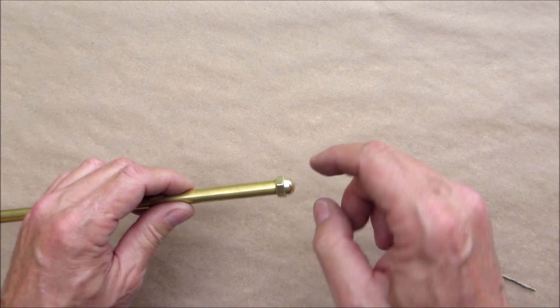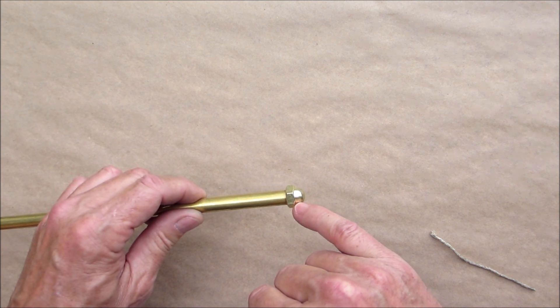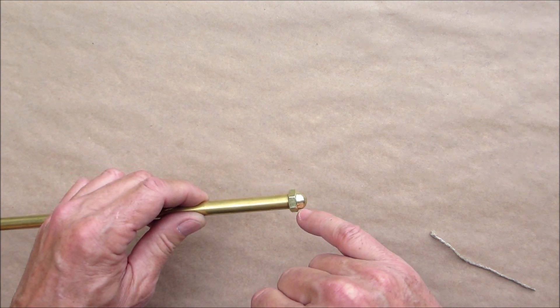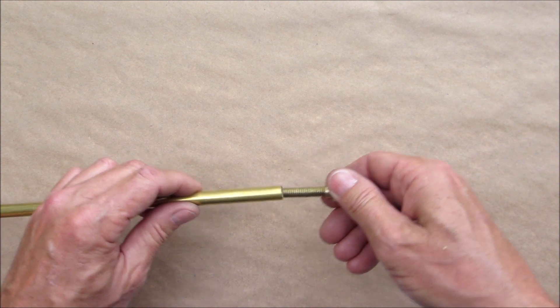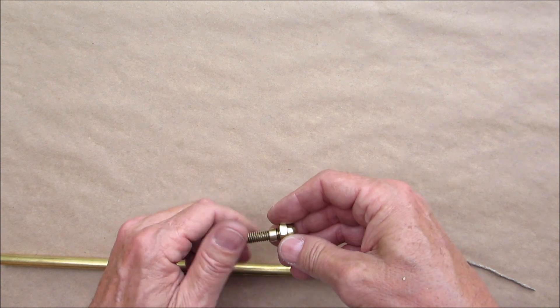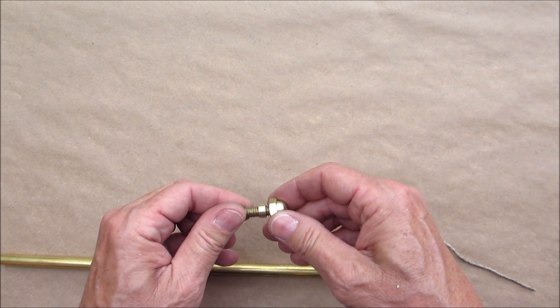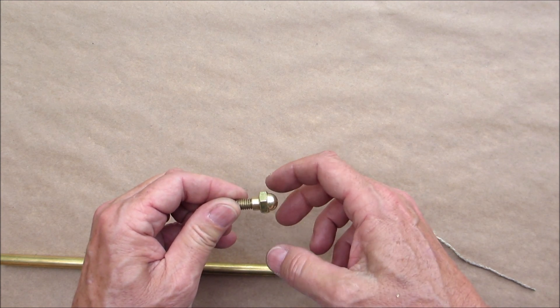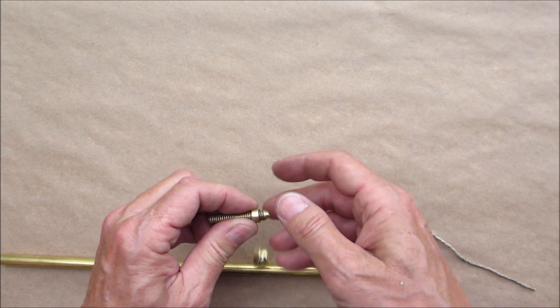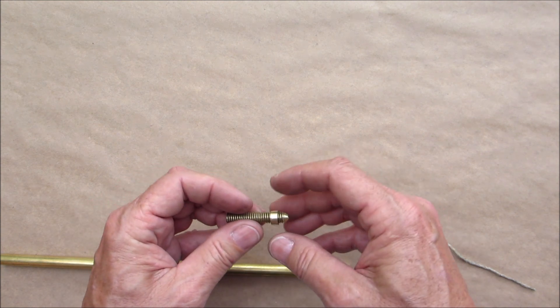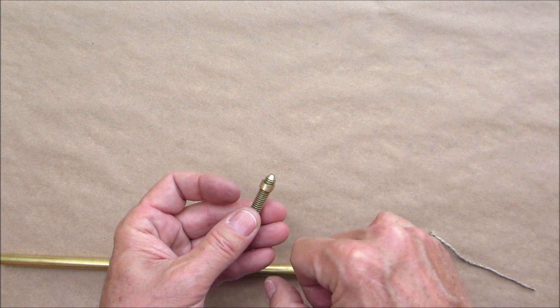And then we're going to grind that down. Hopefully there's enough meat in there when I grind this down to not go through. Otherwise we got to come up with another plan, but I think this will work. So it gives me a good number of threads to grab onto. Just want to double check. Yeah, that's pretty good.